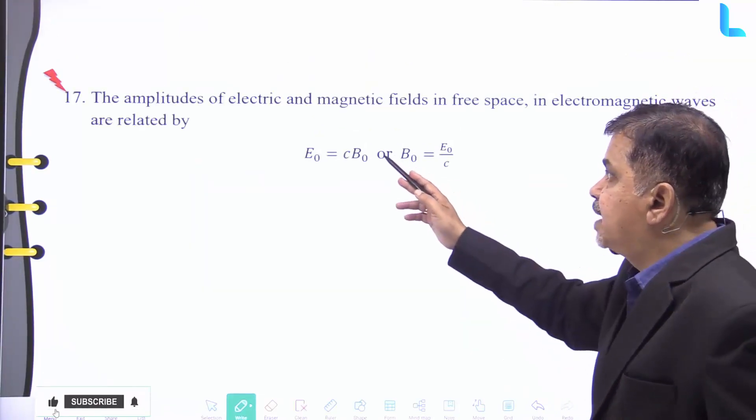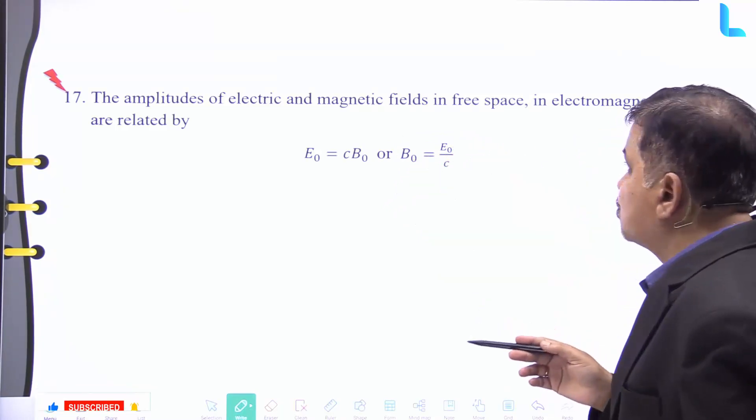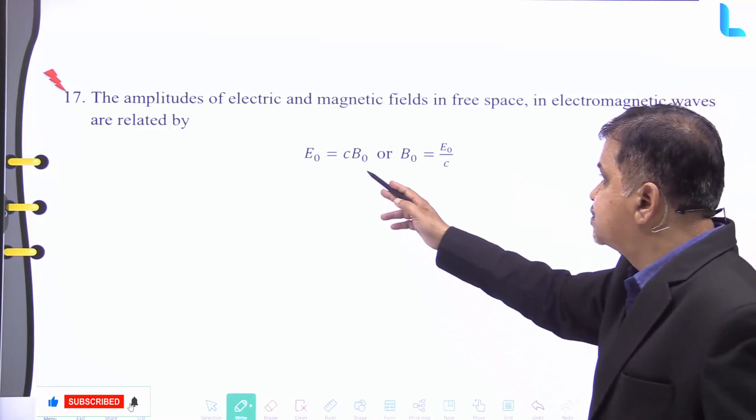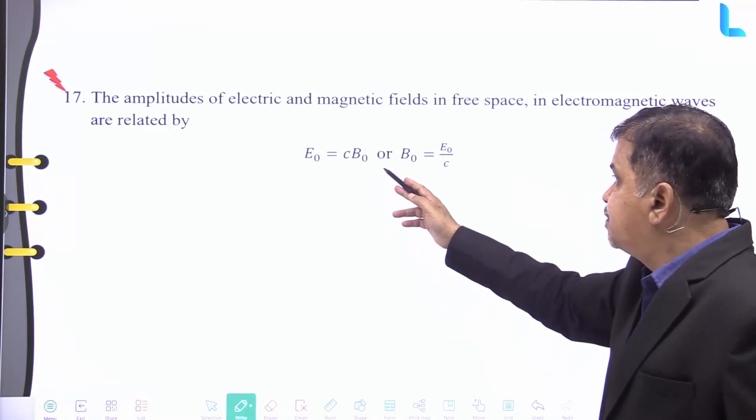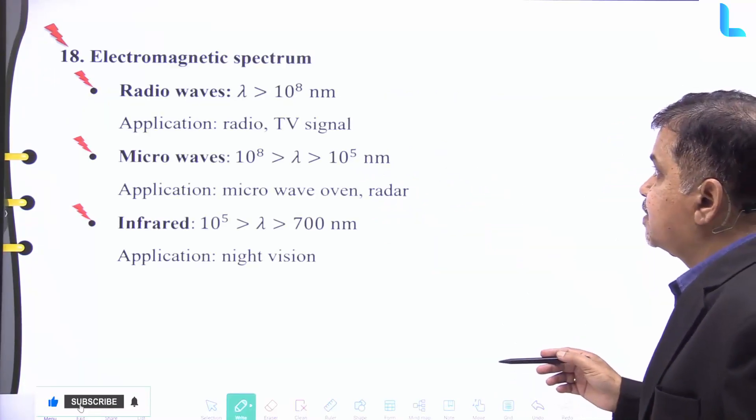The amplitudes of electric and magnetic fields in free space in an electromagnetic wave are related to E₀ equal to c into B₀, or B₀ equal to E₀ divided by c.